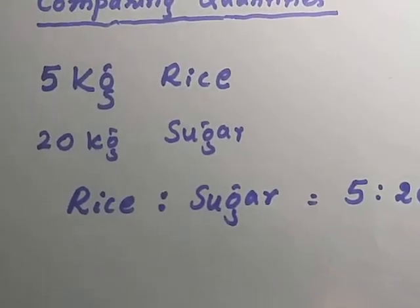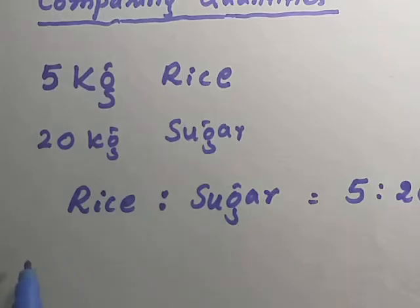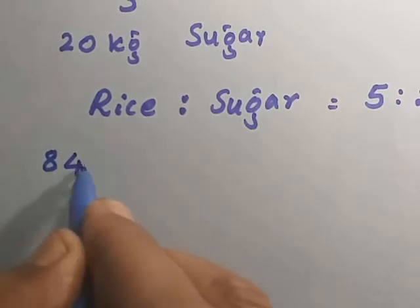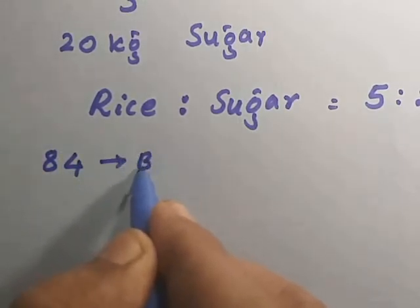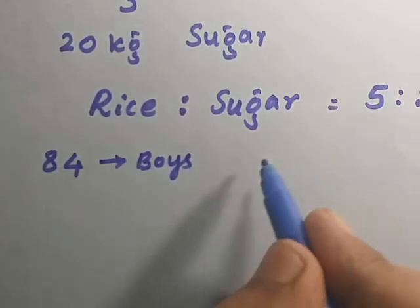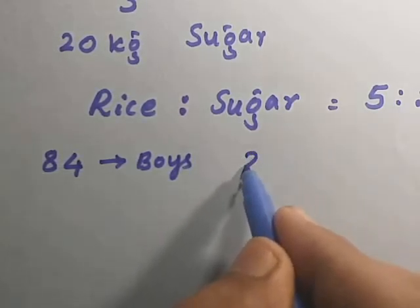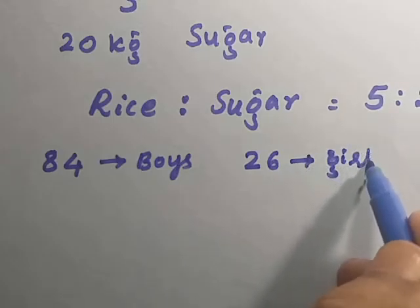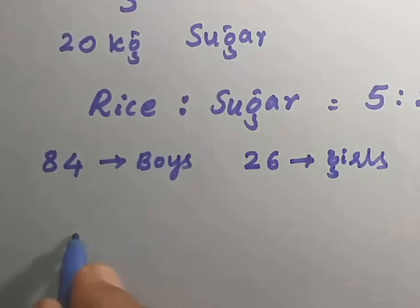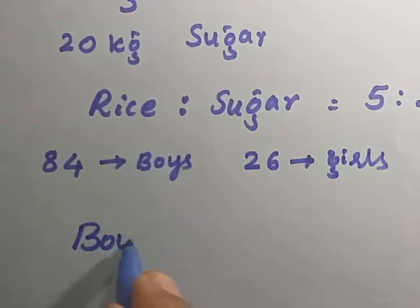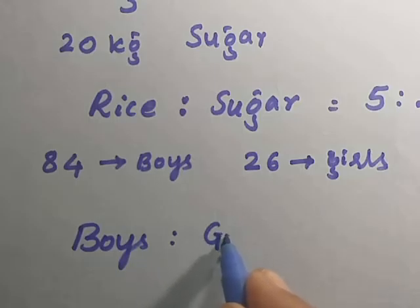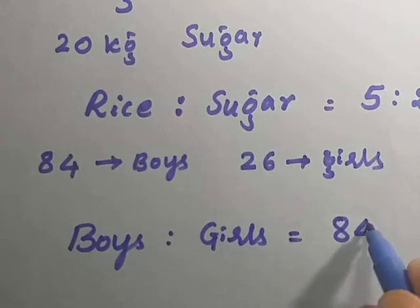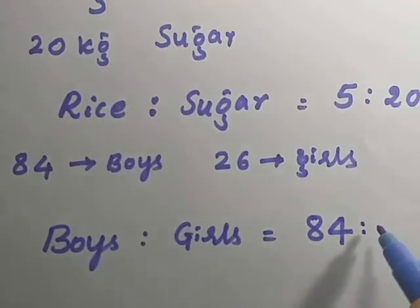Similarly, in a school, there are 84 boys and 26 girls. Then, the ratio of boys to girls is equal to 84 is to 26.